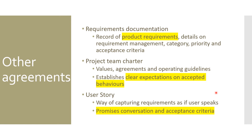The project team charter is very useful in agile methods, where you establish clear expectations on accepted behaviors. It talks about different values, agreements, operating guidelines, and ways of working. While useful in any type of project, a team canvas is most widely used in agile methods.